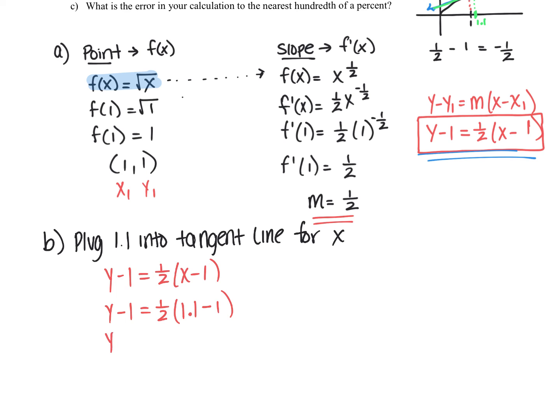So y minus 1, 1/2, 1.1 take away 1 is just 0.1. And technically you can do this by hand, but you could also plug it into the calculator. So let's get this value and then hit resume when you're ready. Alright, so you should have gotten 0.05. And then all we have to do is add 1 to both sides. And we have our answer. So y is equivalent to 1.05. So that's what we got for our estimate.